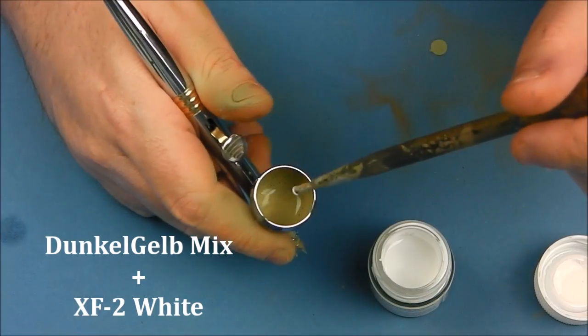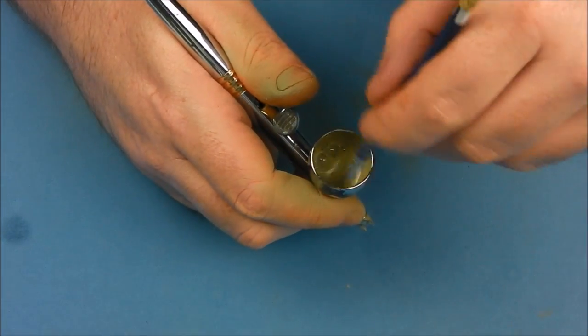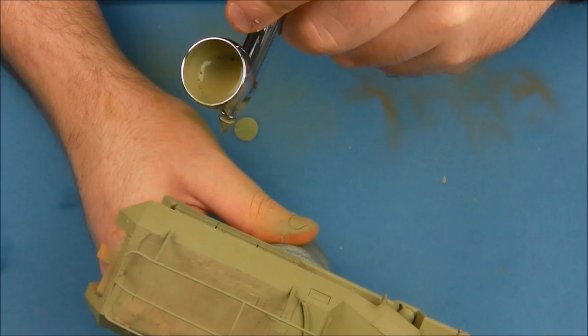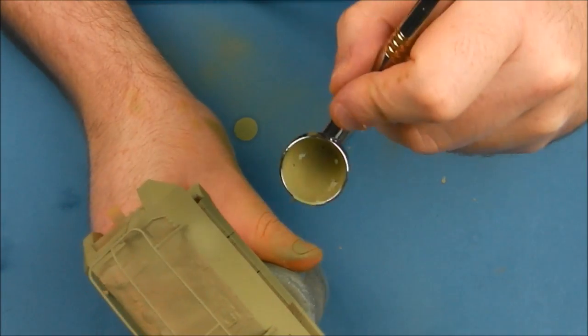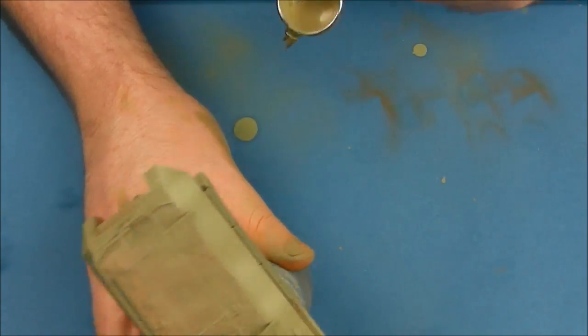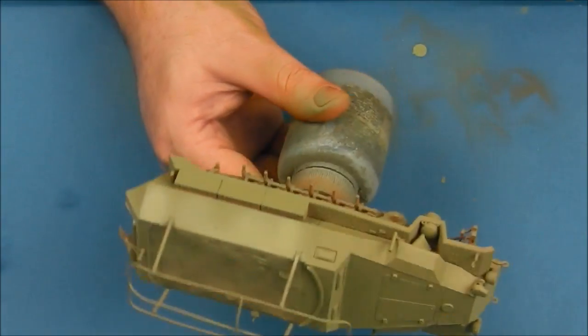We're going to add further highlights to our dunkel gelb layer and I'm just going to add a little bit more XF2 white to our mixture now so it's going to get very pale. Again, this is a very optional layer. I know some people don't like doing extreme highlighting.